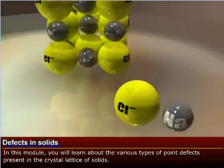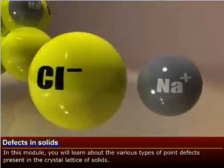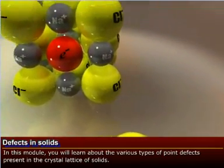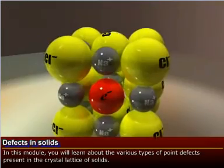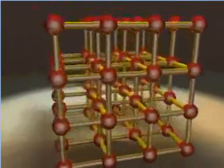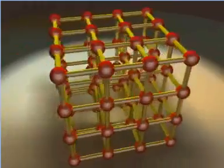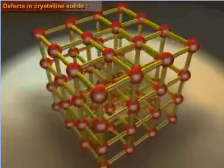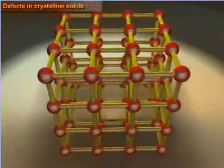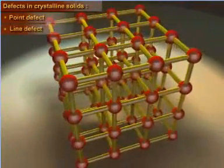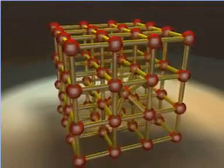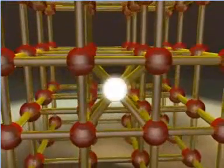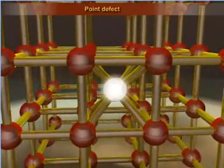In this module, you will learn about the various types of point defects present in the crystal lattice of solids. Crystalline solids have a regular arrangement of the constituent particles. However, this regular arrangement is sometimes interrupted by certain defects in the crystal, such as point defects and line defects. A defect arising due to the irregularity in the arrangement of the constituent particles around a single lattice point is referred to as the point defect.